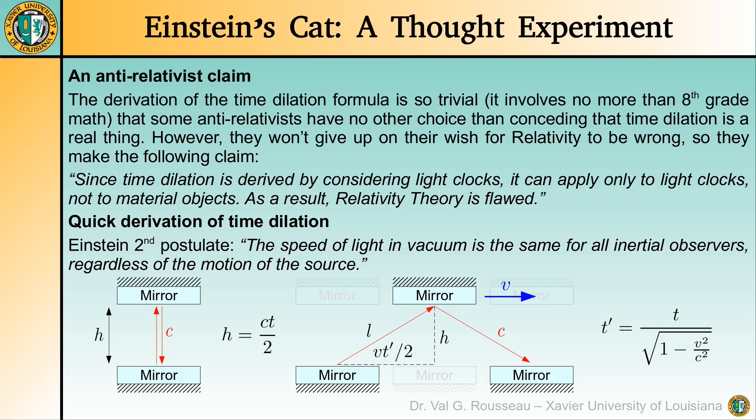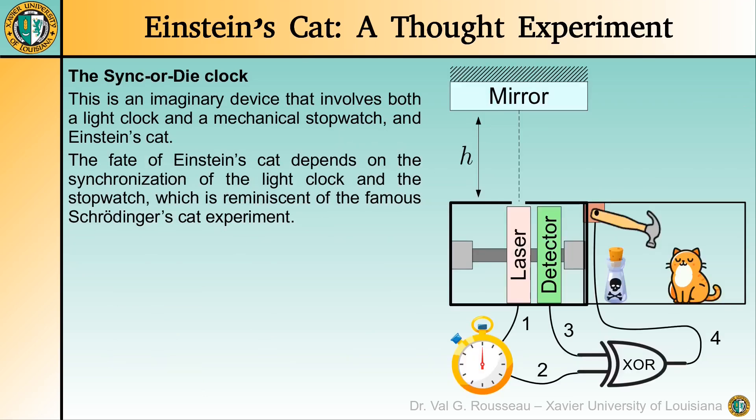Nevertheless, some anti-relativists claim that the time dilation formula does not apply to material objects. In particular, it supposedly does not apply to a mechanical clock. So, let us prove them wrong. We are going to consider here another imaginary device, a sync-or-die clock. It involves both a light clock and a mechanical stopwatch, and the fate of Einstein's cat will be determined on whether the light clock and the stopwatch are synchronized or not.